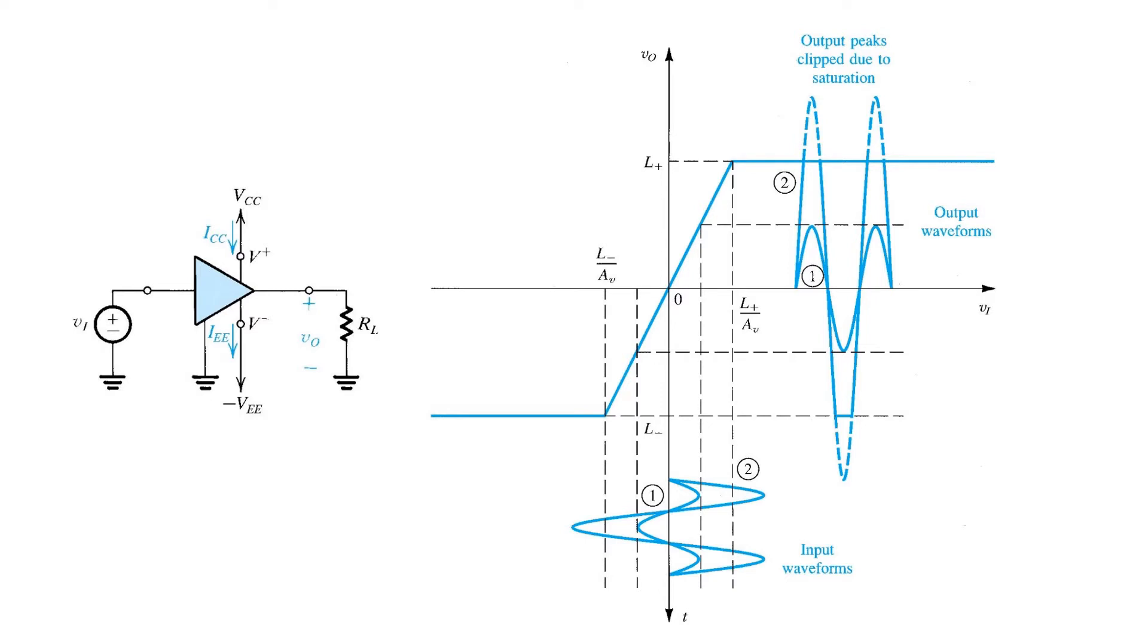We'll call the upper voltage limit that the output can reach L+, and the lower limit L-, so that the output voltage VO is constrained within these limits.